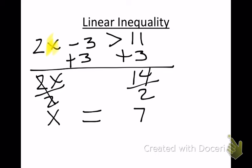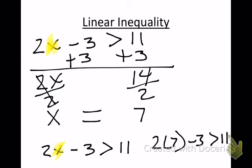I'm going to rewrite the inequality. 2x minus 3 is greater than 11. If I put in 7 for x, I'm going to do 2 times 7 minus 3. 2 times 7 is 14. 14 minus 3 is 11.